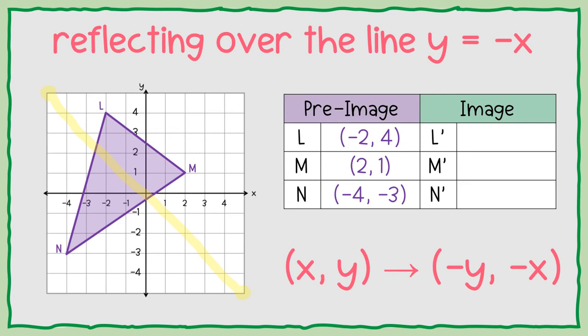we're going to switch them and change their signs. So L prime is going to be at the point negative 4, positive 2. L prime.